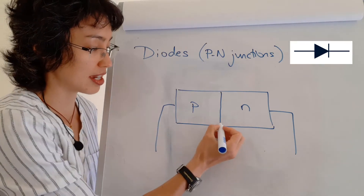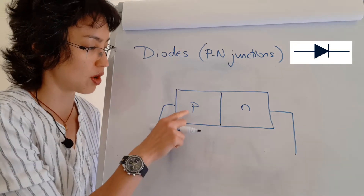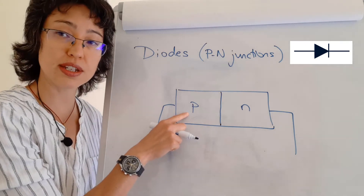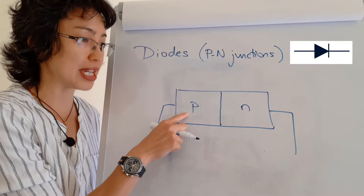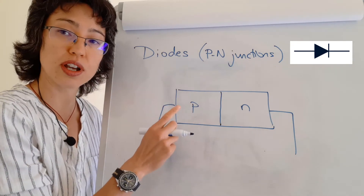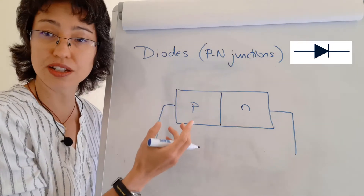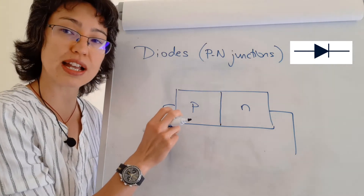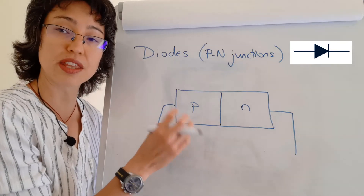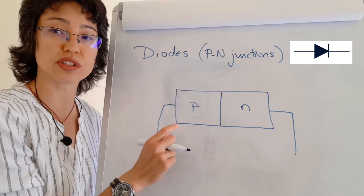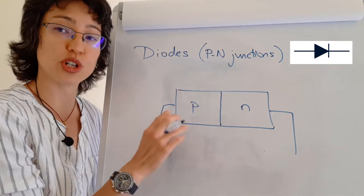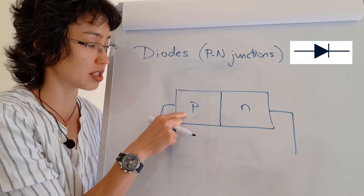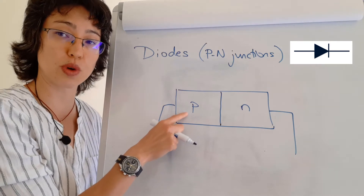A quick recap on p- and n-type doping: p-type doped semiconductors have group three impurity atoms, which have one electron too few compared to silicon. Those impurity atoms can accept an electron from the valence band, become ionized, and are left with holes in the valence band. The holes are the majority charge carriers. The material is neutral, but the majority charge carriers in p-type semiconductors are holes, which are positively charged — that's why we call them p-type.